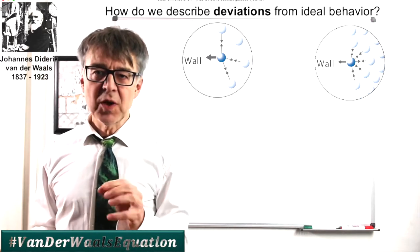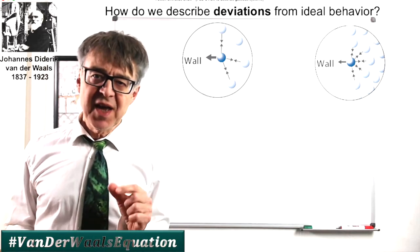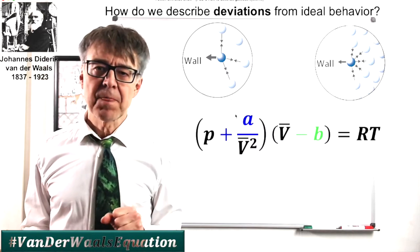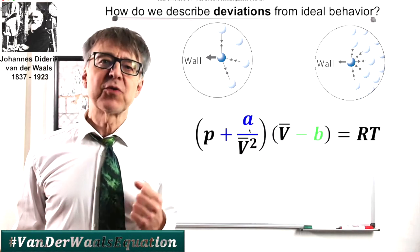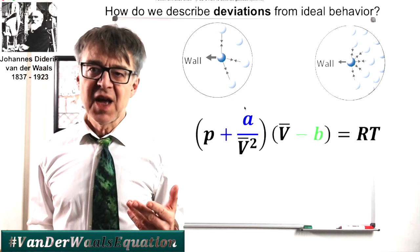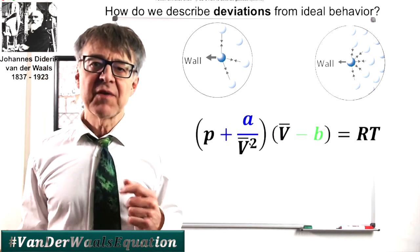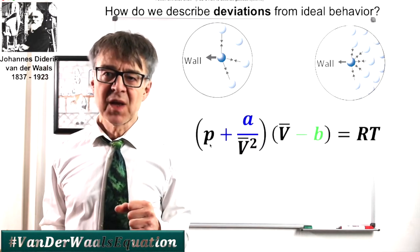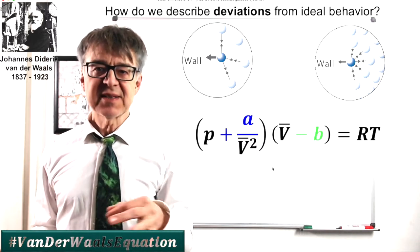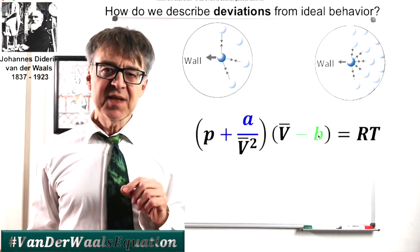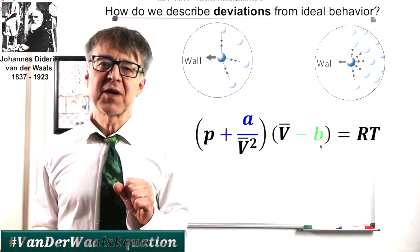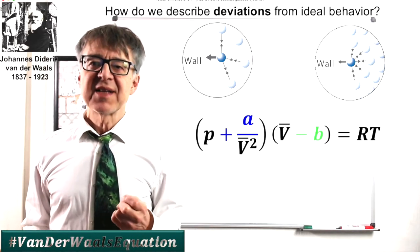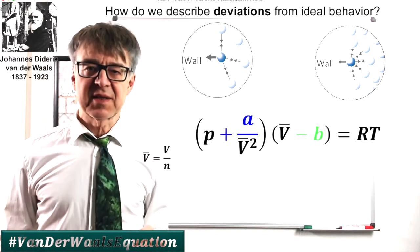Mr. van der Waals has quantified these deviations from ideal behavior. He modified the ideal gas equation and added two correction factors. Factor A is a measure for the attractive forces of the particles. The measured pressure P is less than the ideal pressure. B is a measure of the intrinsic volume. And because the ideal volume available to the particles is smaller than the real volume B, B has to be subtracted from volume.